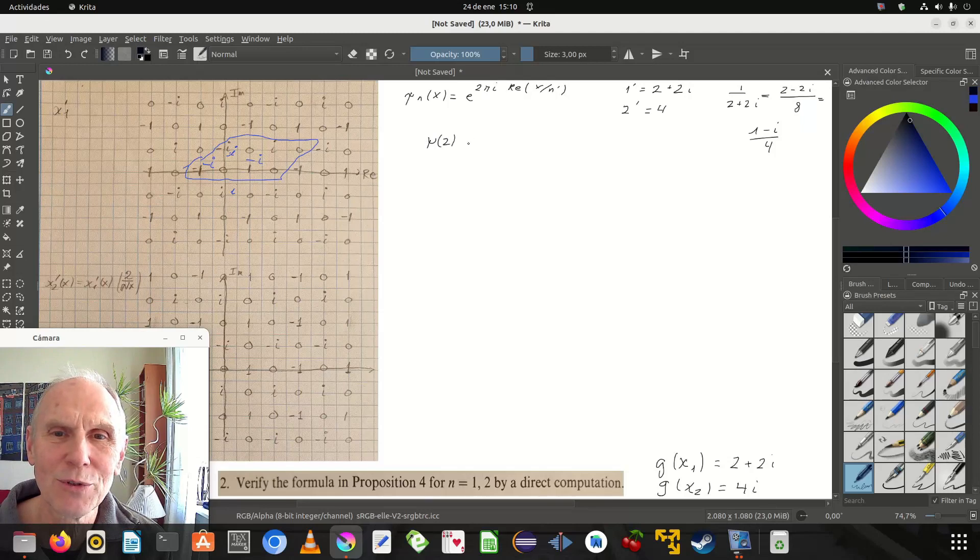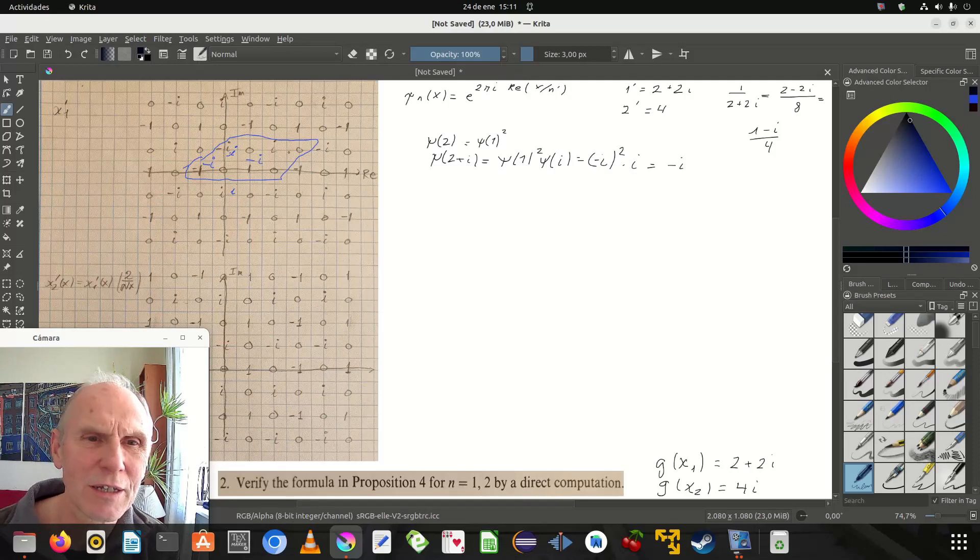Psi of two equals psi of one squared. So psi of two plus i equals psi of one squared times psi of i, equals minus i squared times i, that is minus one minus i.